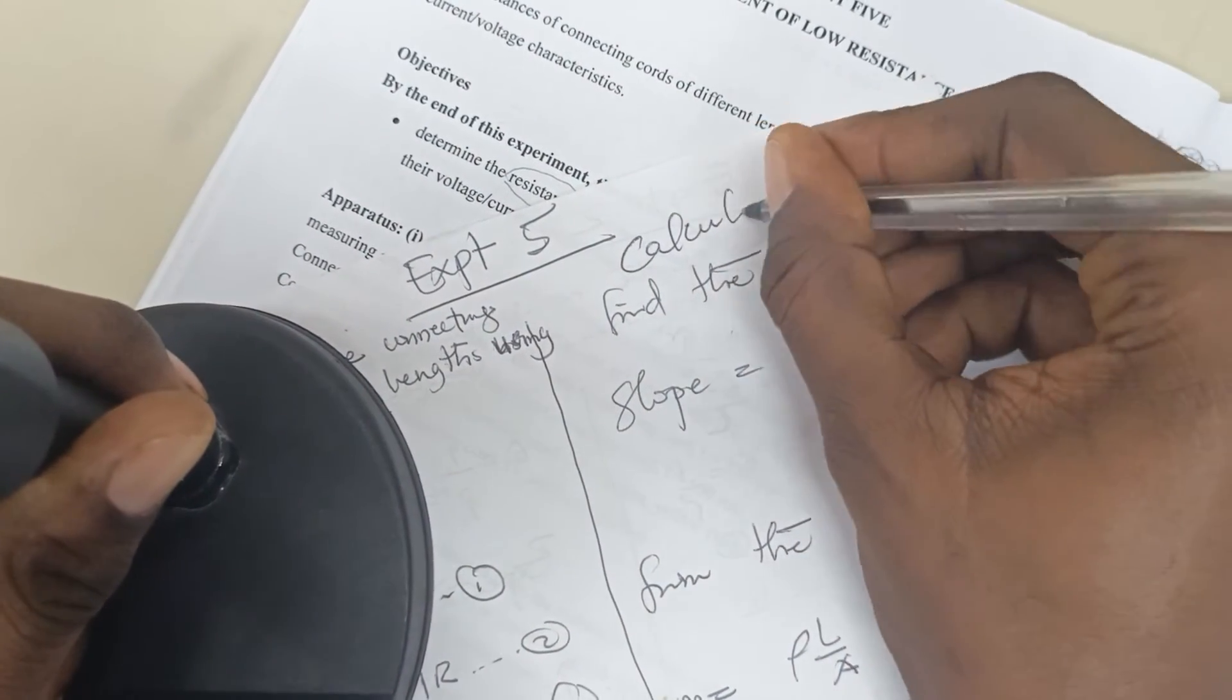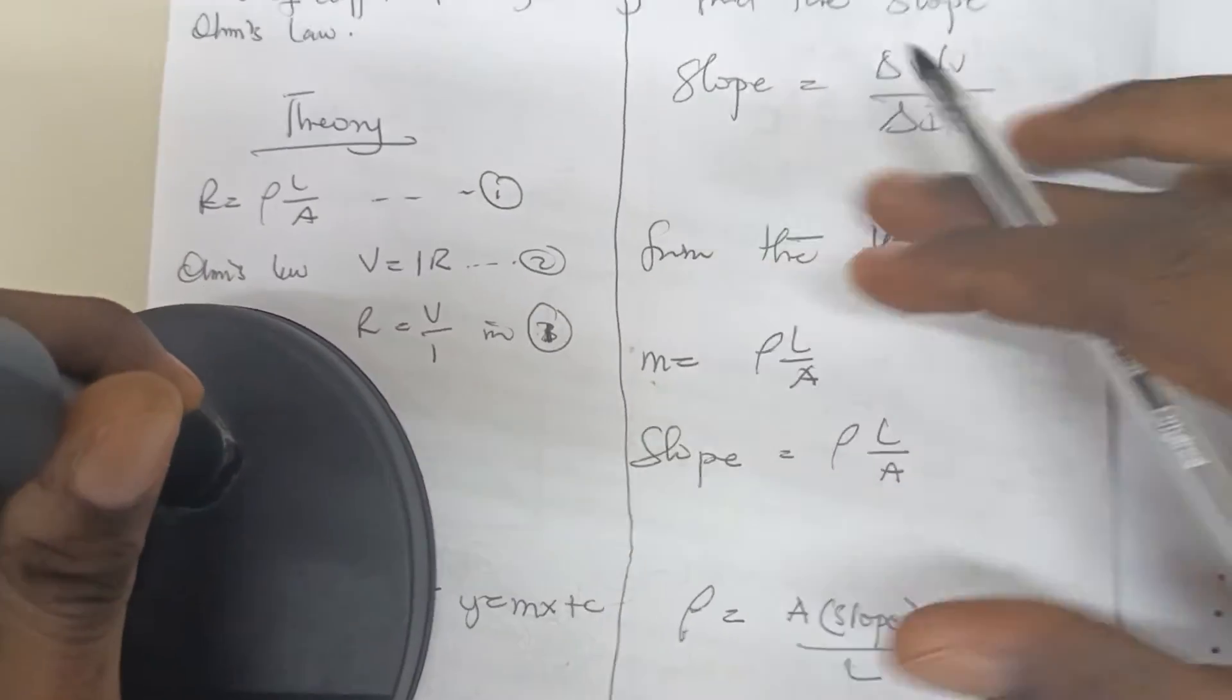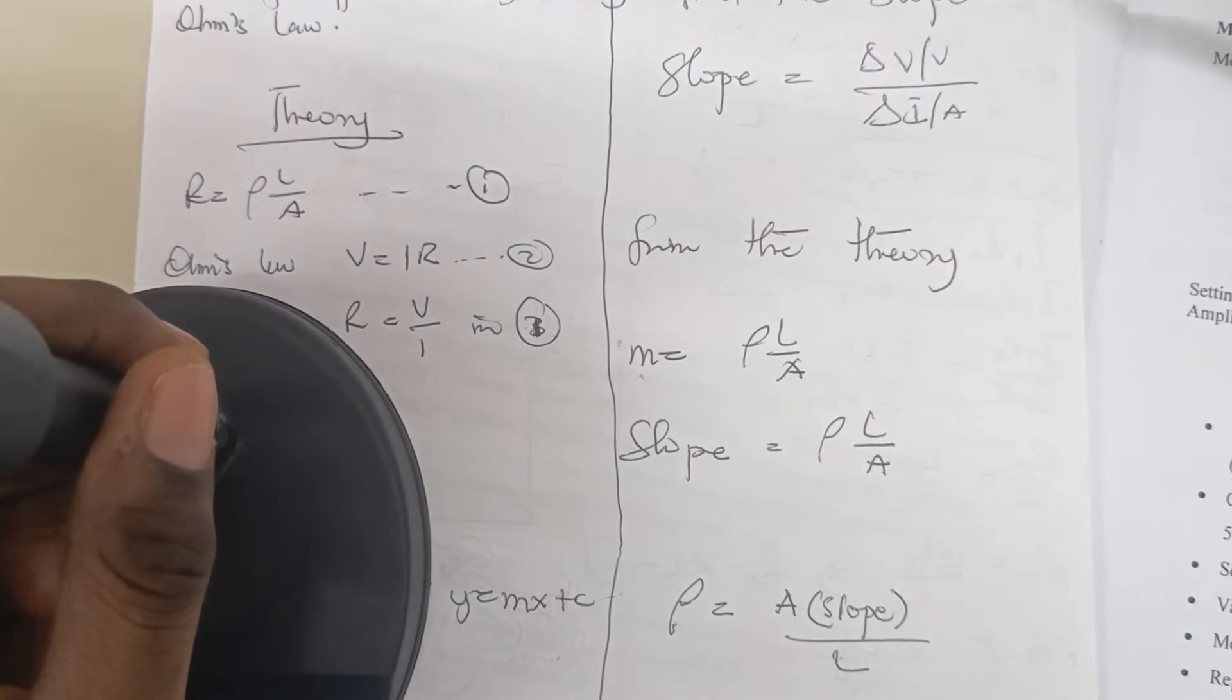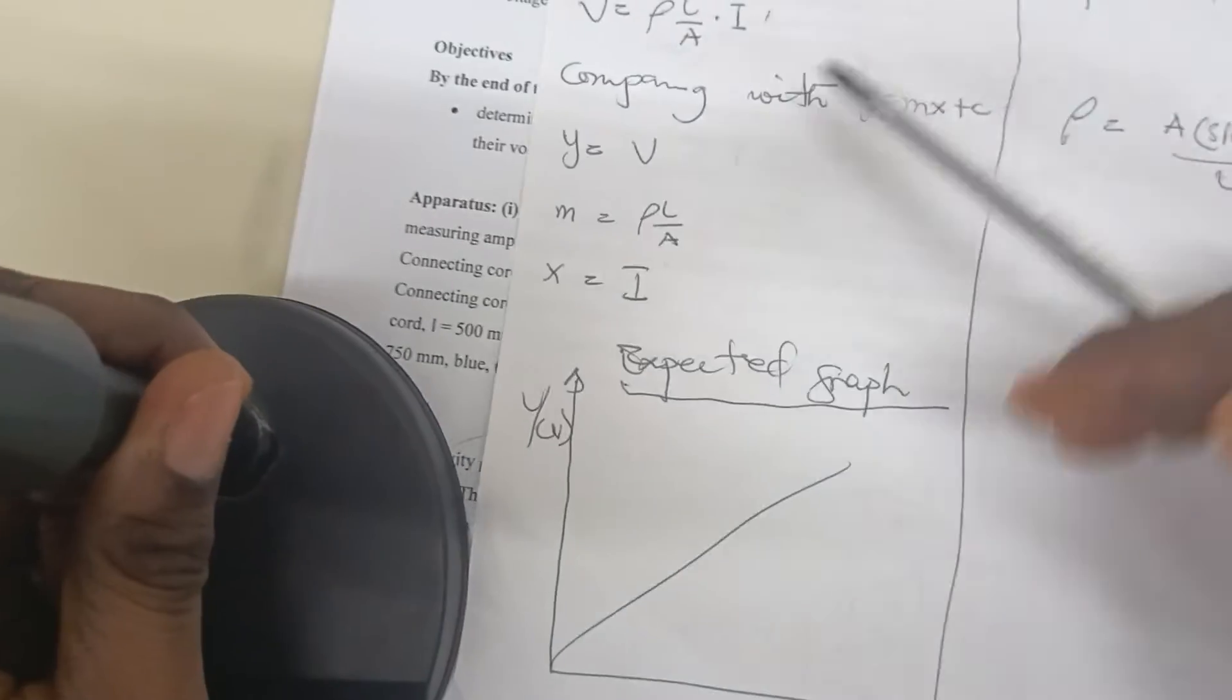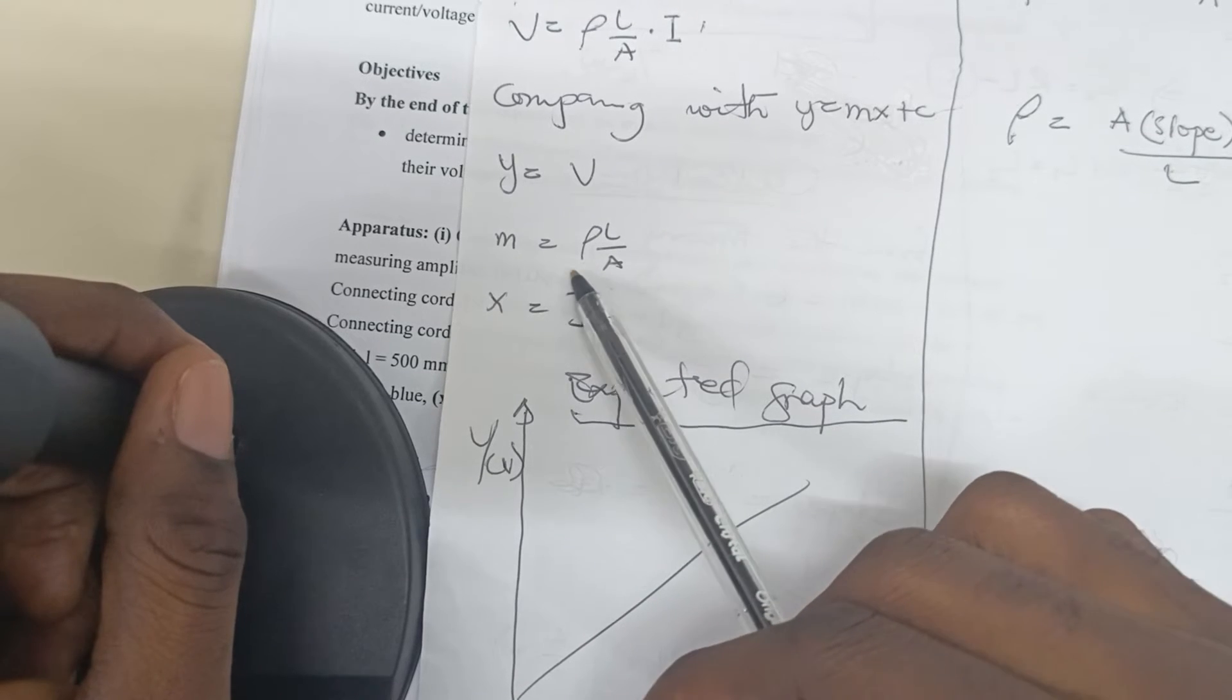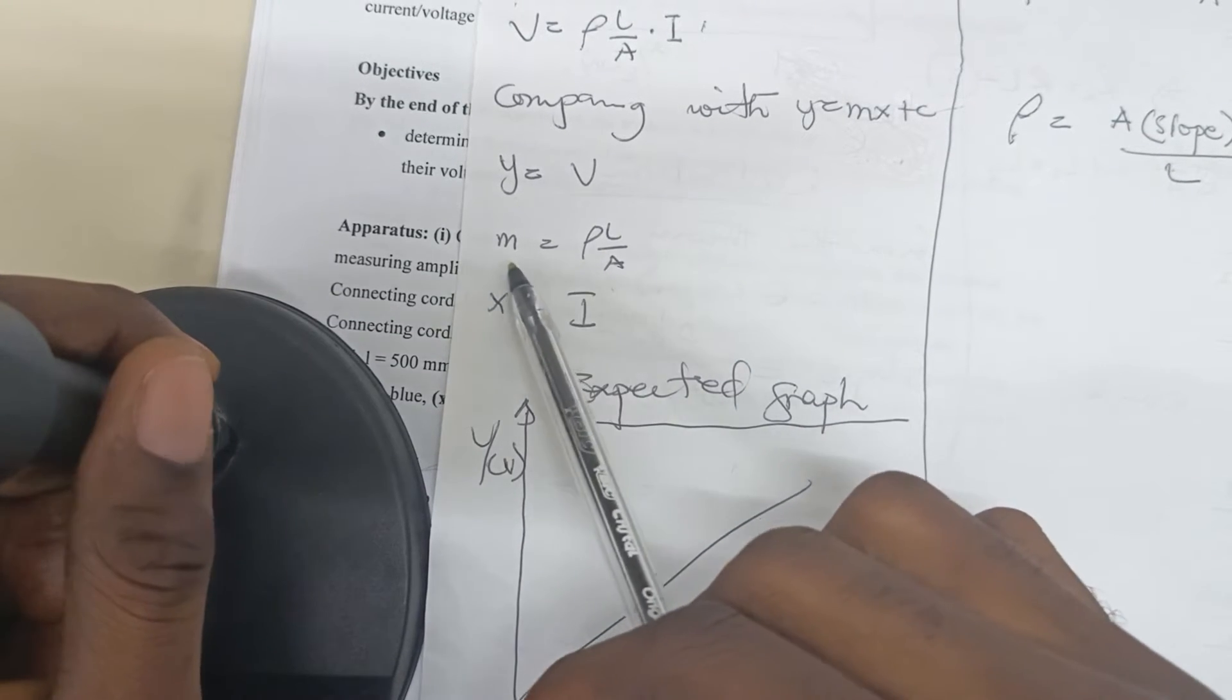Under calculation, we find the slope as usual for the graph that we've drawn. After finding the slope, we said that our resistivity is supposed to be this way. There's a formula. We said slope, this slope.